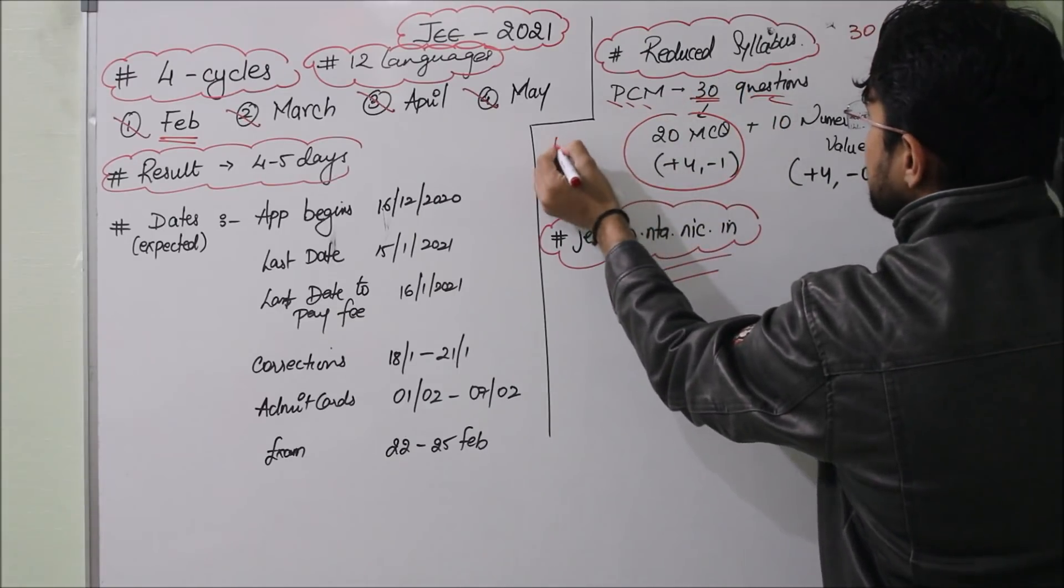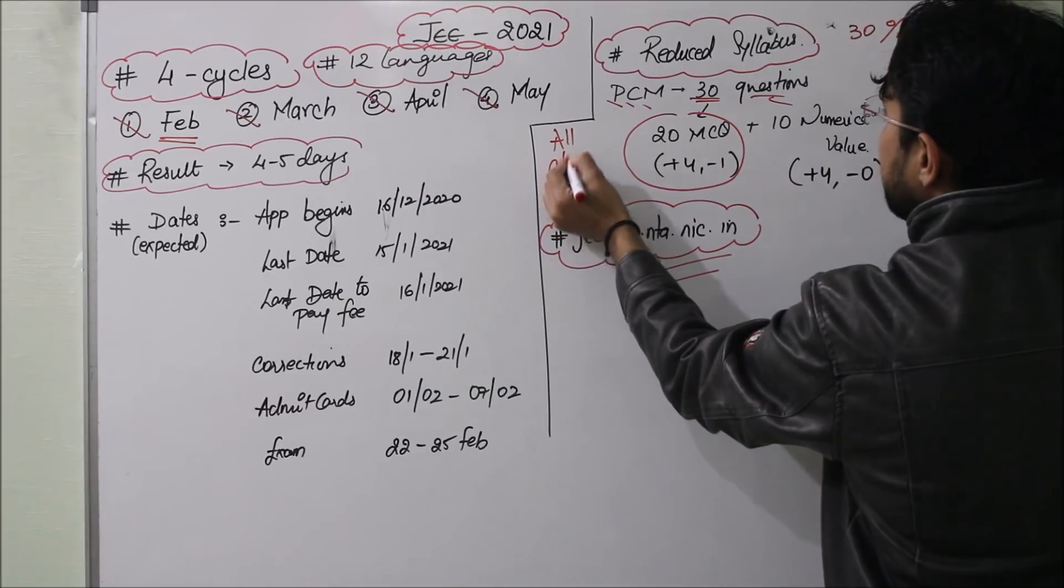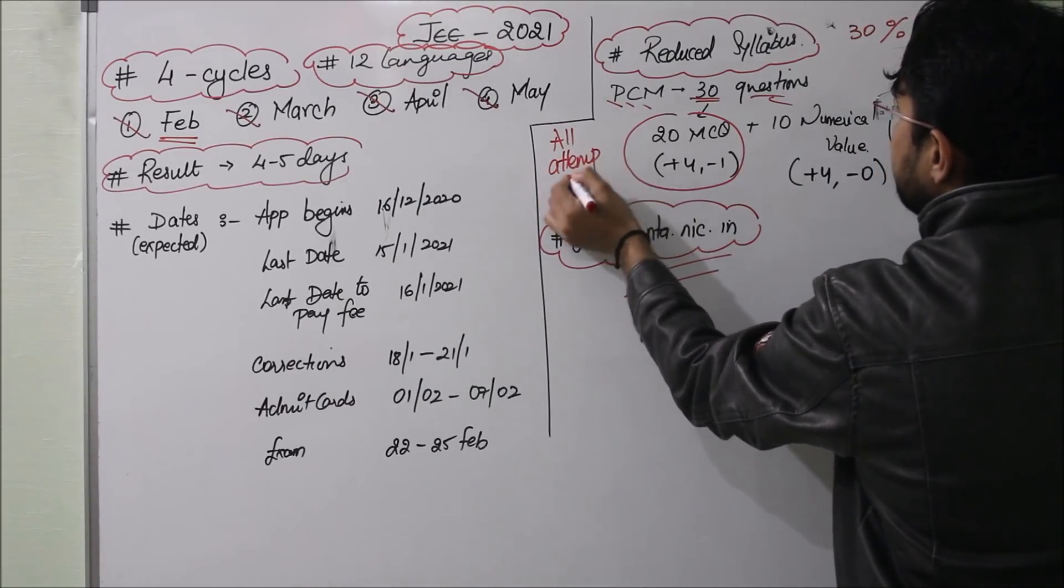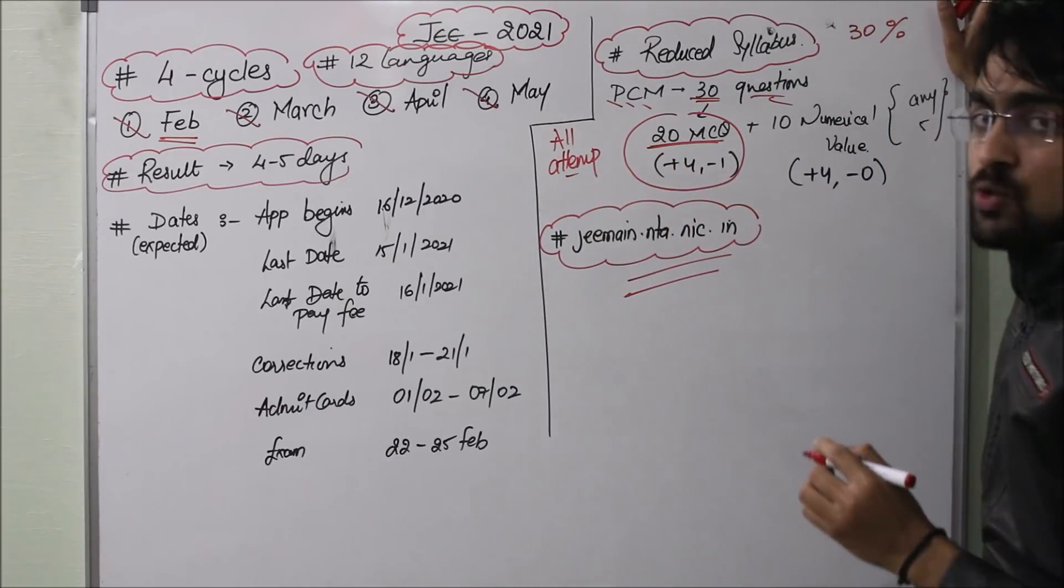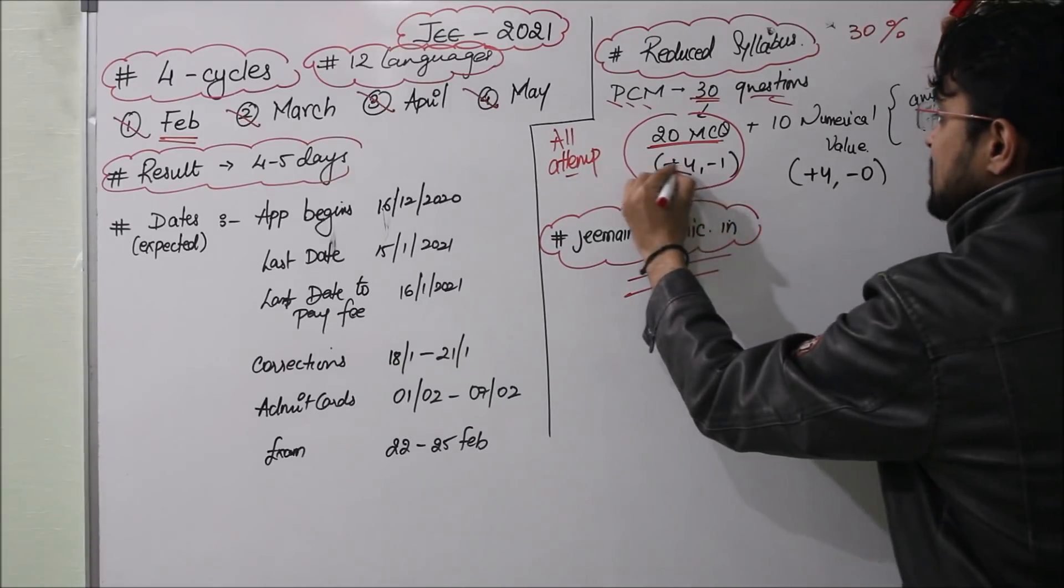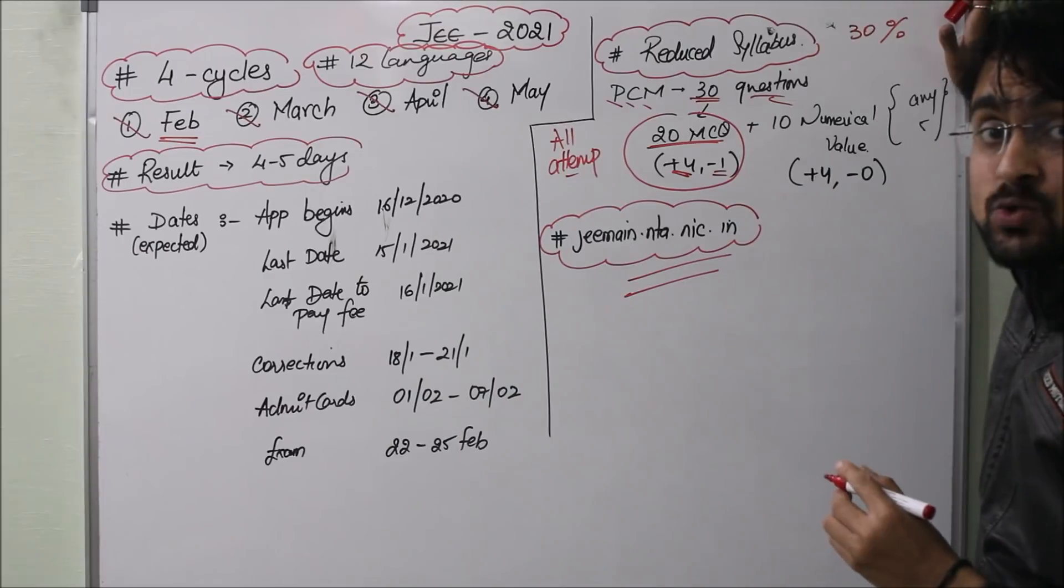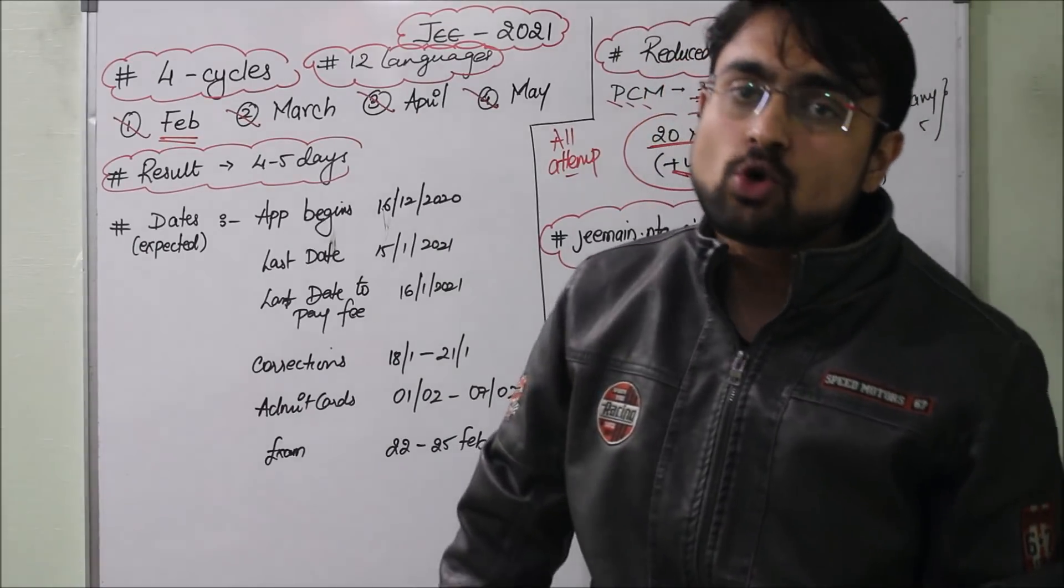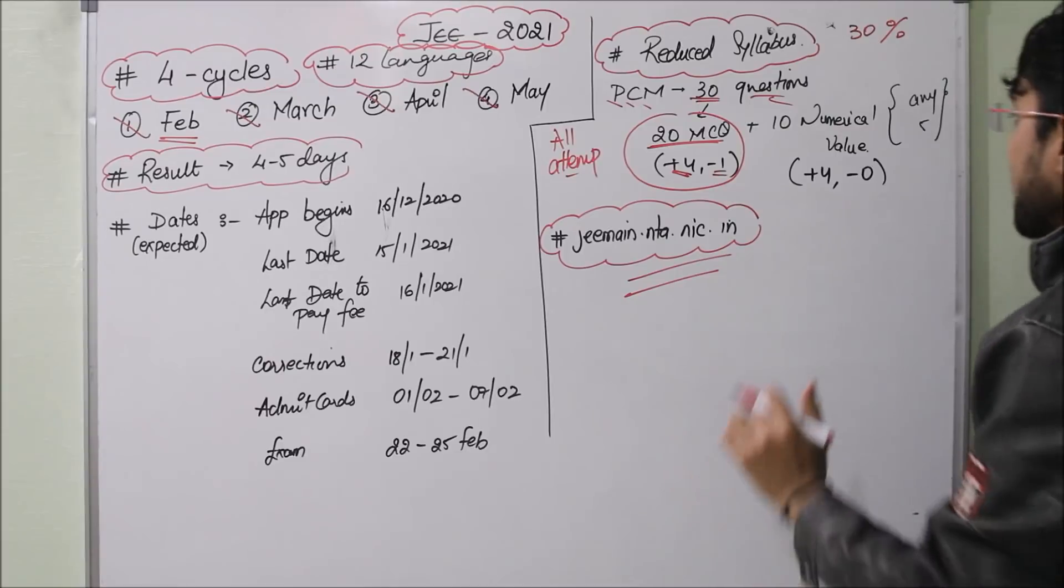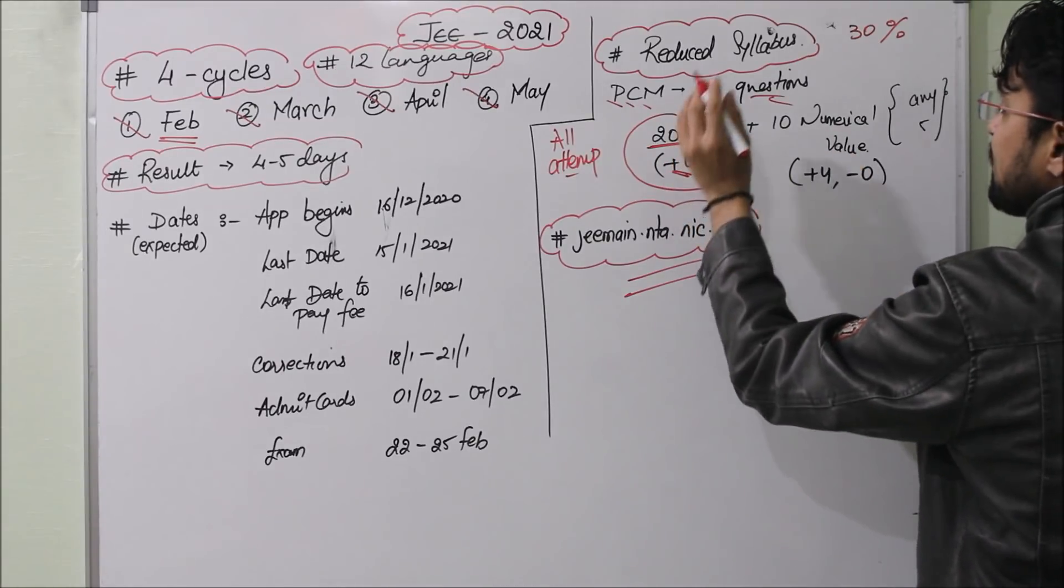I will give you questions which you will have to attempt. These are multiple choice questions. If you have the correct answer, then plus 4 marks. If wrong, then minus 1. If unattempted, then no marking, zero.